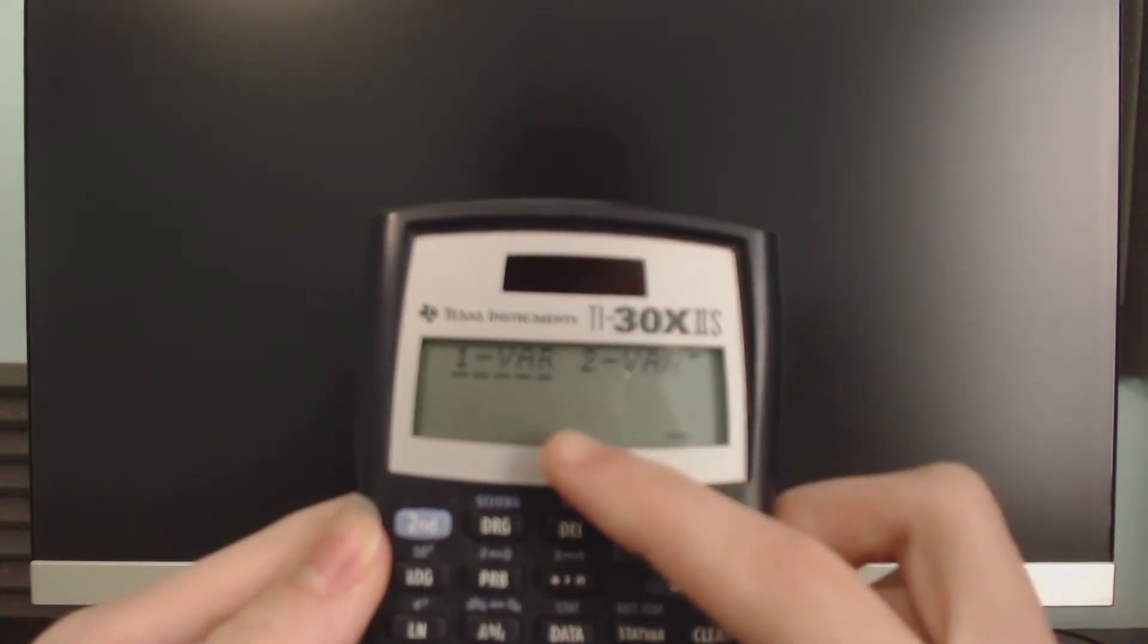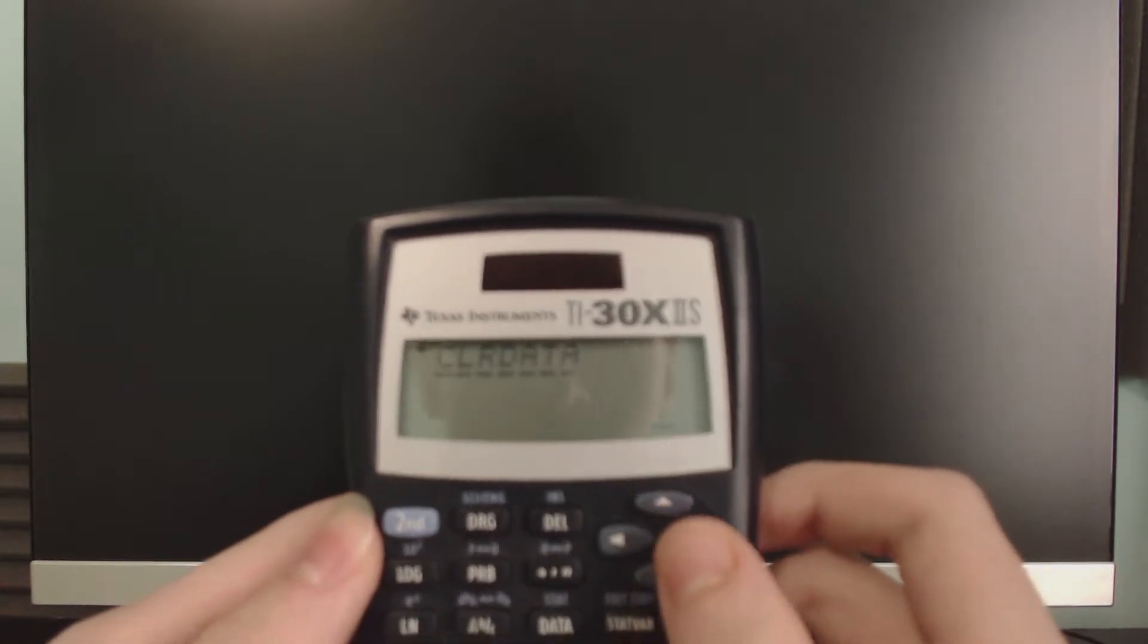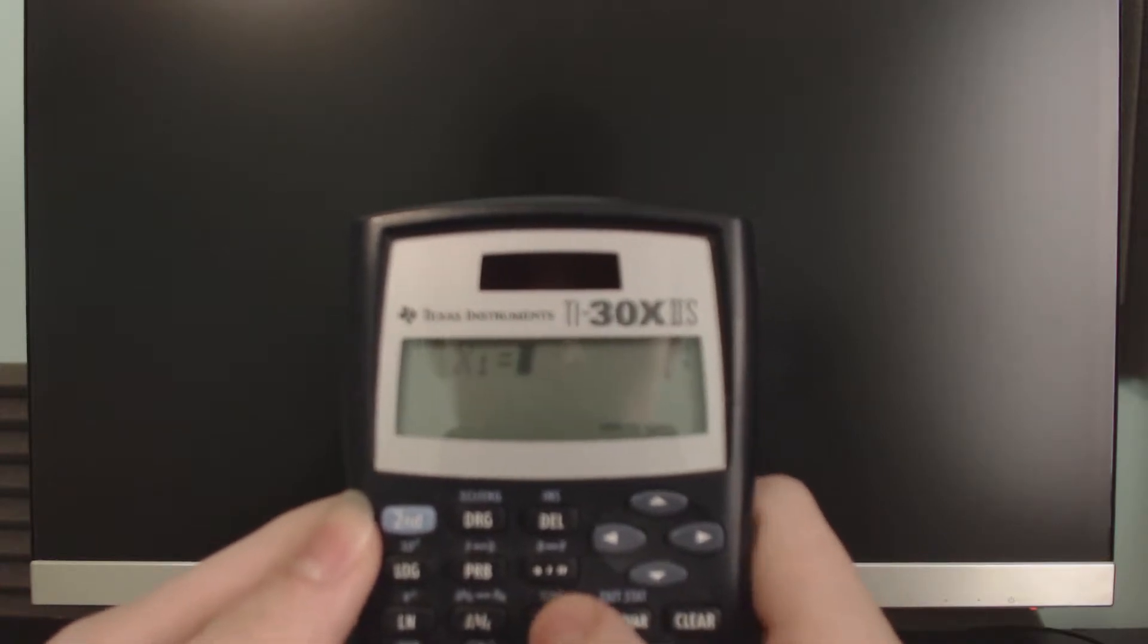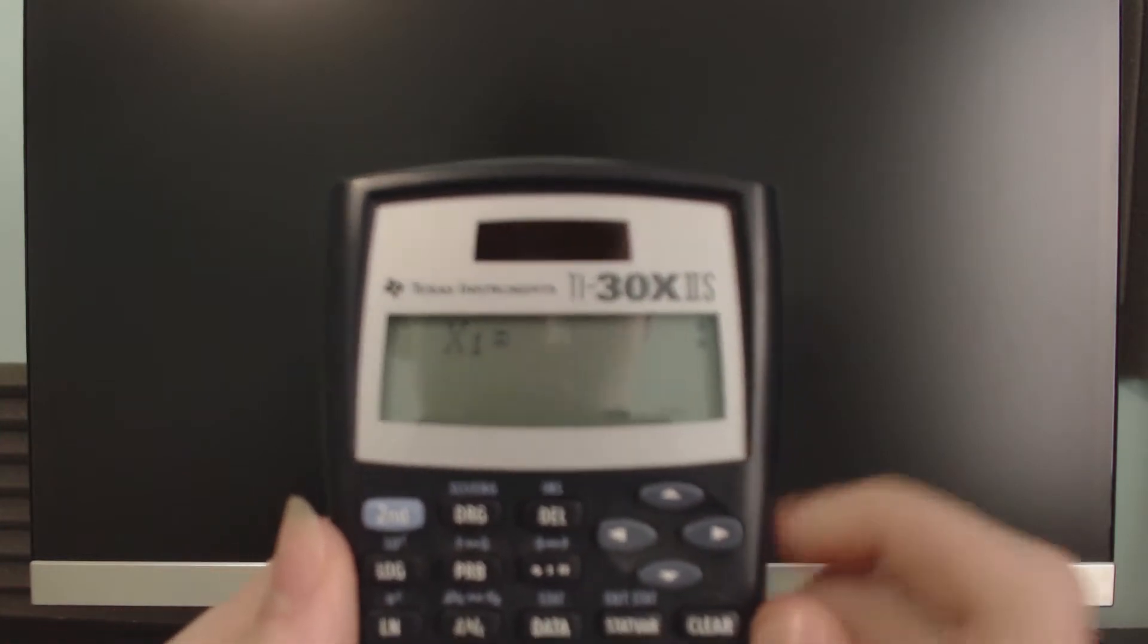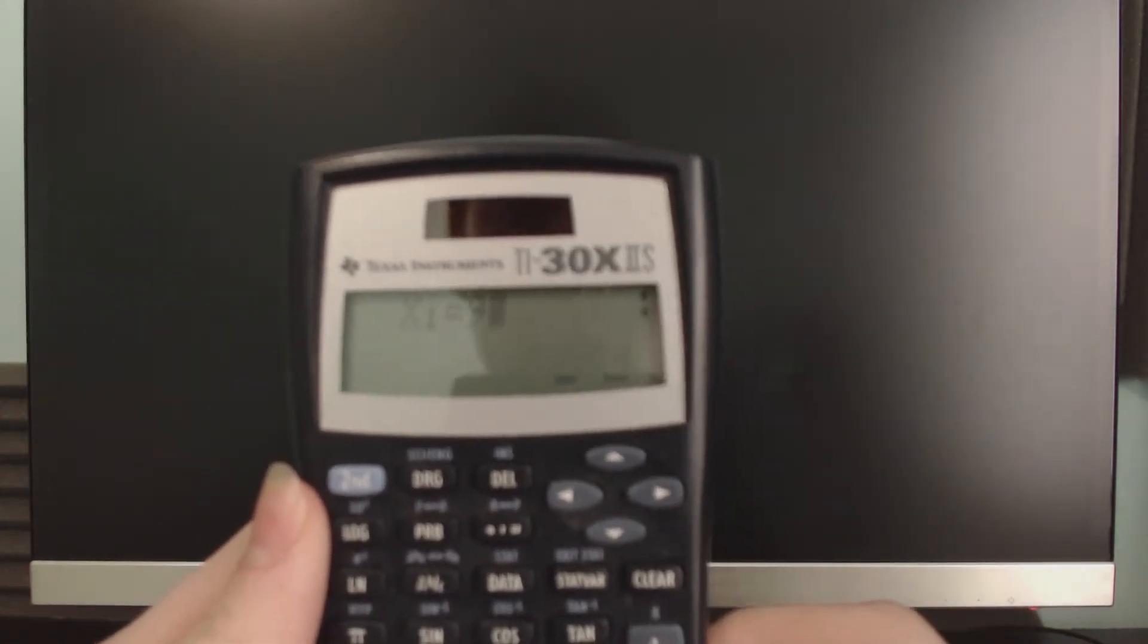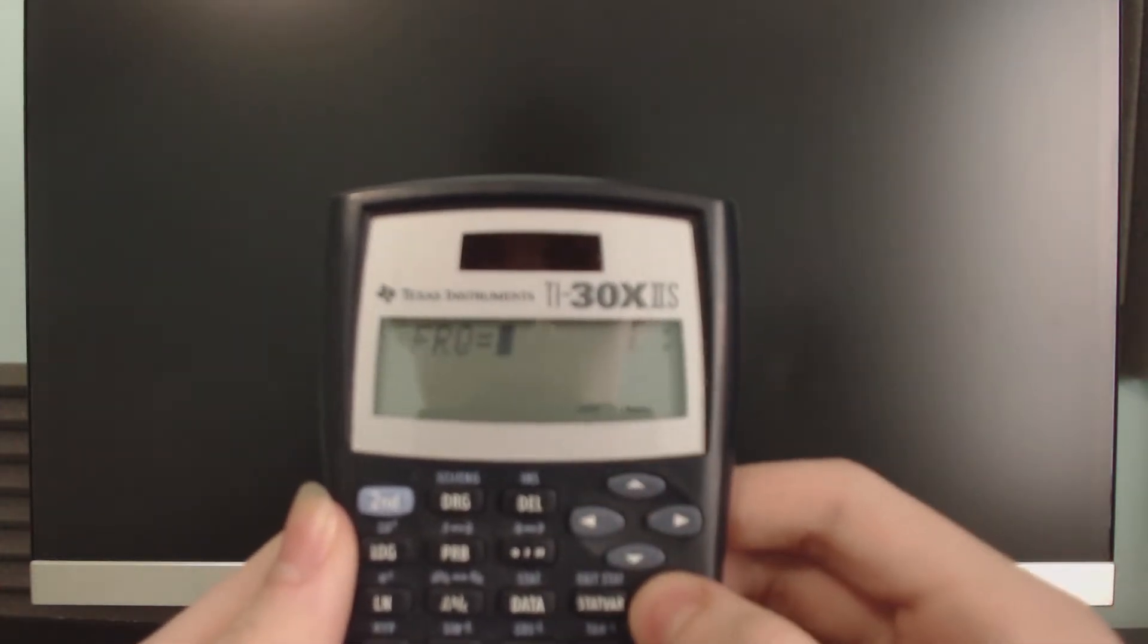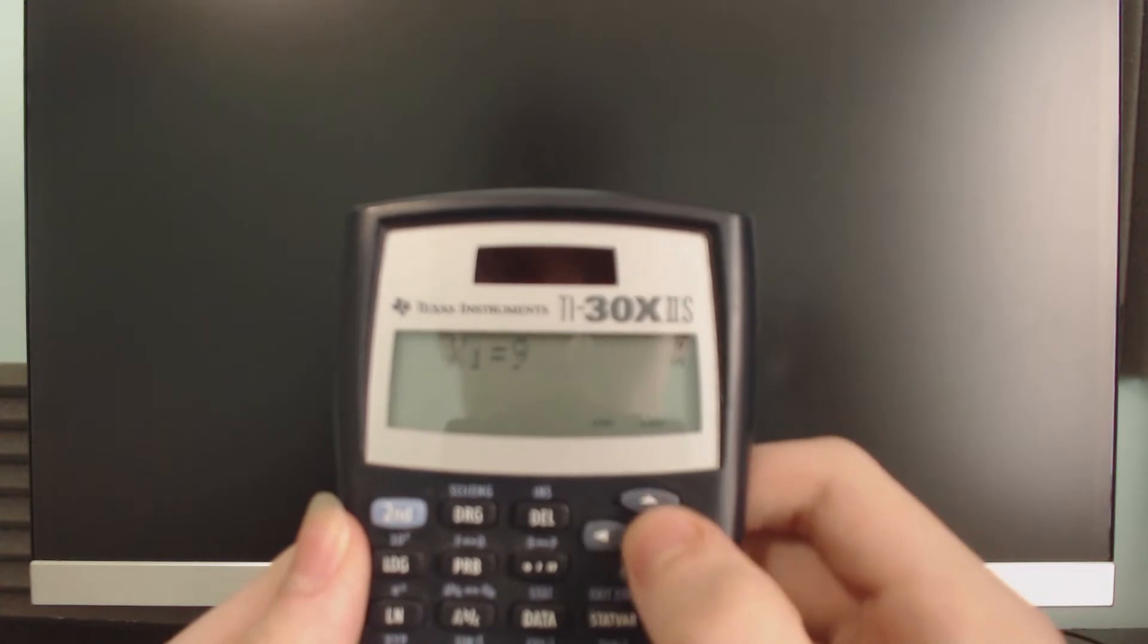Right here, there's one var, two var, and clear data. We can press one var and see what happens. There you go - it got around the stat error message and now shows X1 equals. Then there's FRQ, X2, and all that stuff.